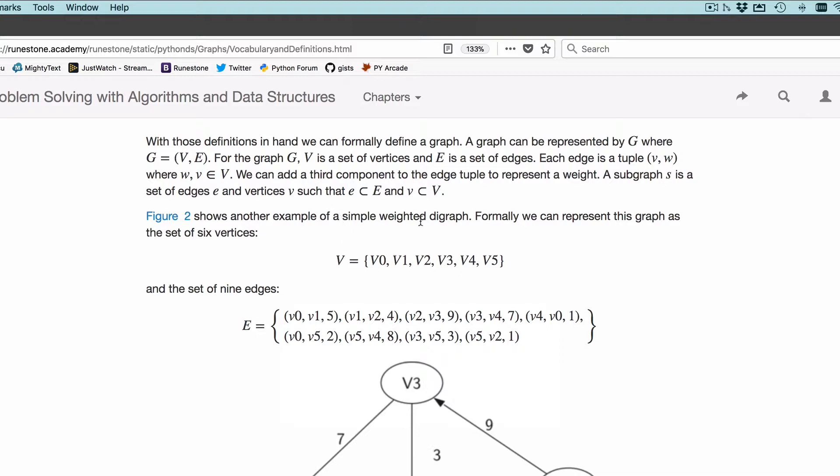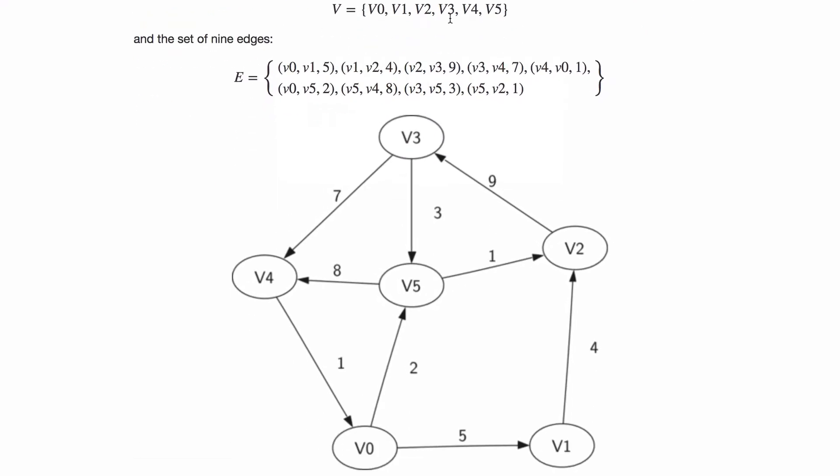Here's an example of representing this. Here's a set of vertices. This list of vertices is V0 through V5 - those are the IDs. That's the V in the graph definition, the set of vertices.